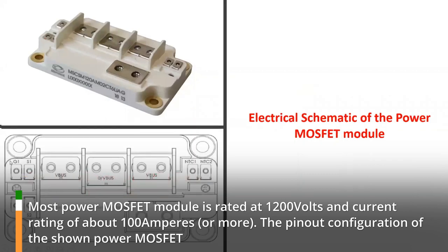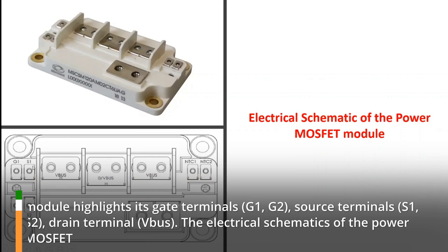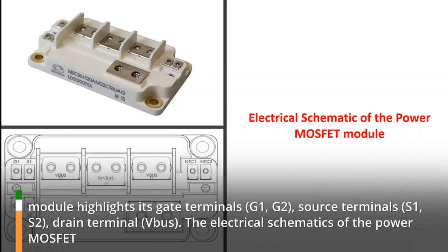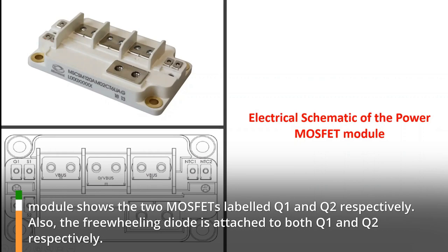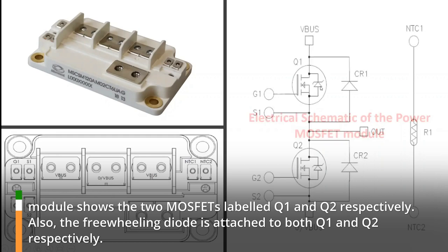The pinout configuration of the shown power MOSFET module highlights its gate terminals G1, G2, source terminals S1, S2, and drain terminal bus. The electrical schematics of the power MOSFET module shows the two MOSFETs labeled Q1 and Q2 respectively. Also, the freewheeling diode is attached to both Q1 and Q2 respectively.